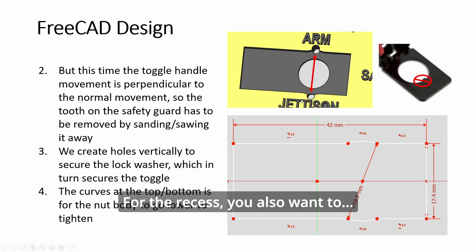For the recess, you also want to, because the toggle guard is a bit narrow and the locking holes are wider, you have to put them here and also make a slight curve.